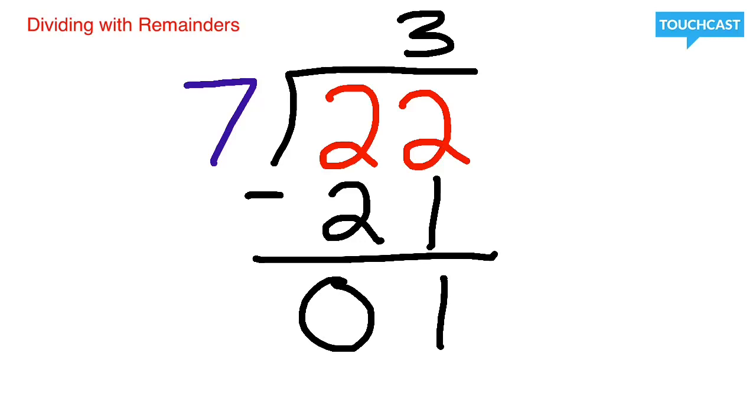Now we have this number right here, this 1, sitting all alone. We can't have 7 go into 1 anymore. 7 is too big to do that. So we're going to carry this 1 up, and we're going to count that 1 as our remainder.